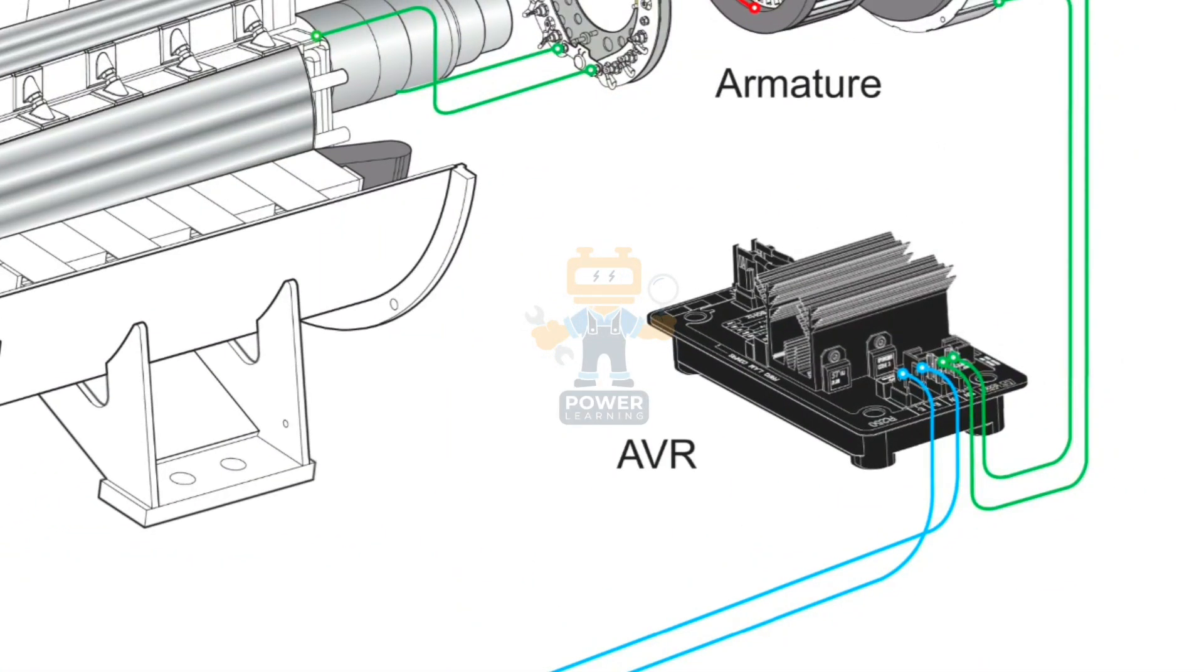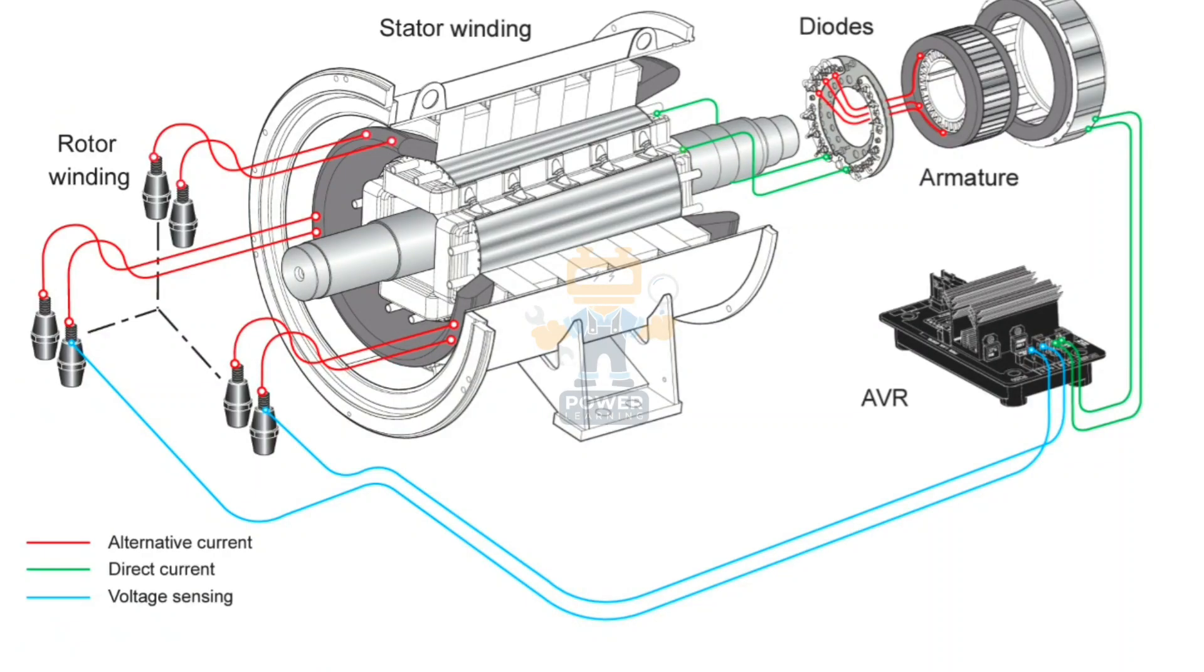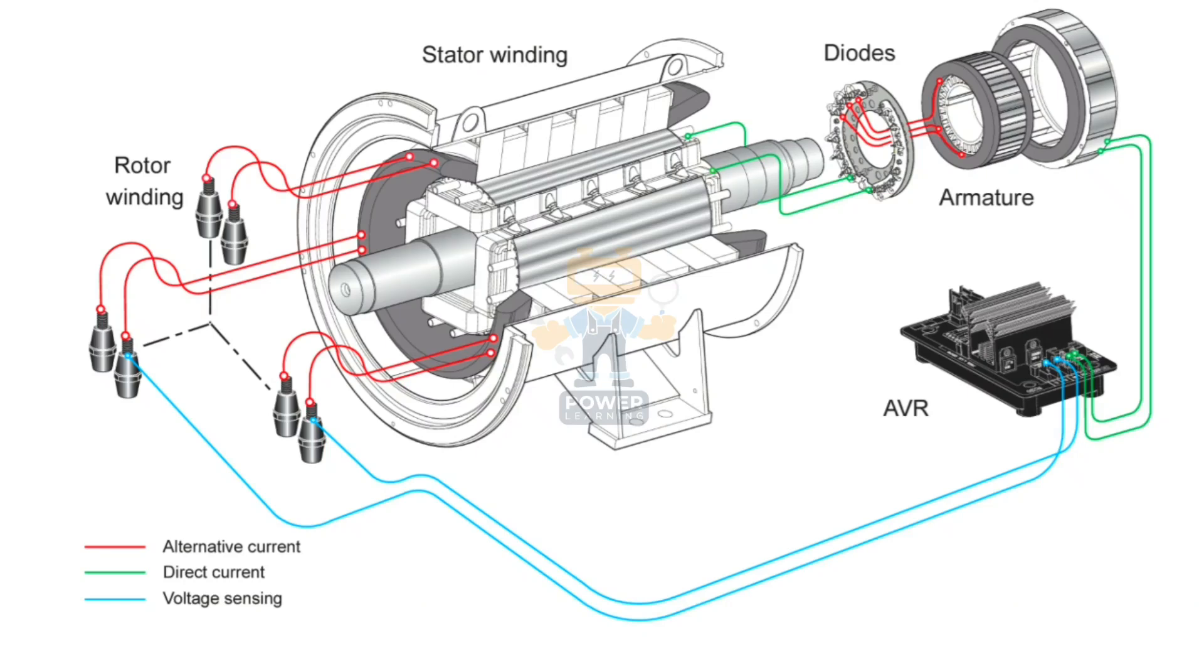We also have AVR, which is called automatic voltage regulator. We have many types of AVRs. This is showing the basic type of AVR which has only four wires. I will explain this in the video.